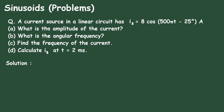In this video we will see an example on sinusoids. A current source in a linear circuit has Is equal to 8 cos(500πt − 25°) ampere. We have to find: the amplitude of the current, the angular frequency, the frequency of the current, and calculate Is at t = 2 milliseconds.